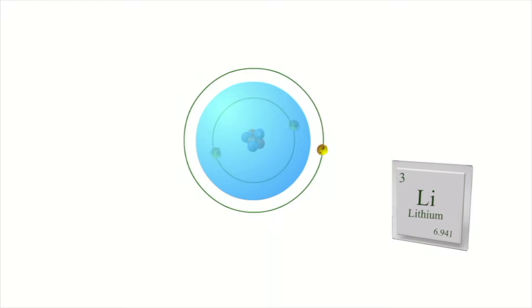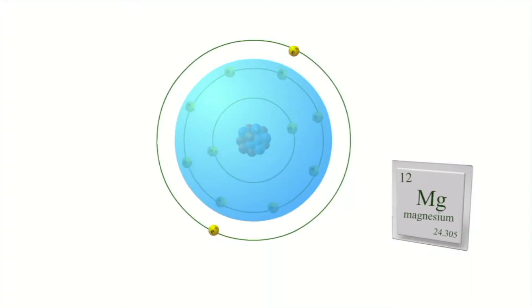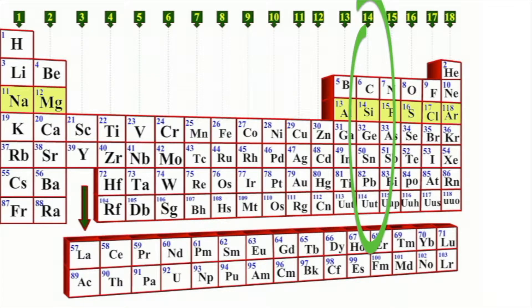Elements in group 1 have one electron in their outer shell, like lithium. Elements in group 2 have two, like magnesium. Elements in group 13 have three, like aluminum. Elements in group 14 have four electrons in their outer shell, and so on.